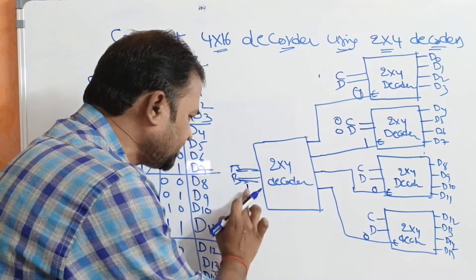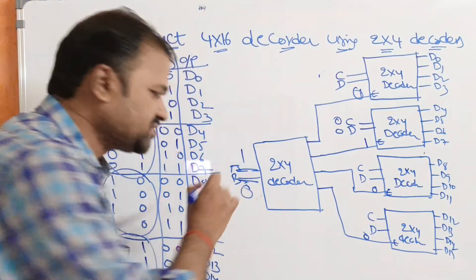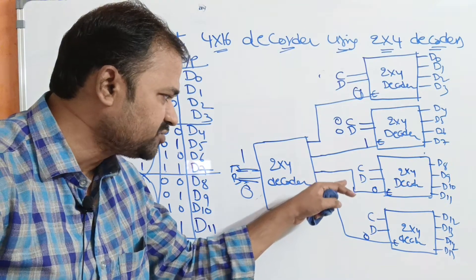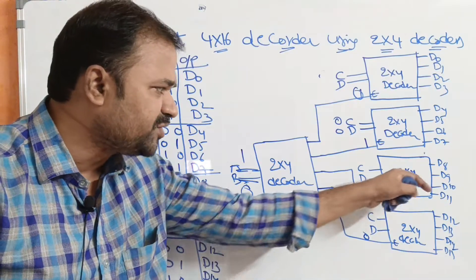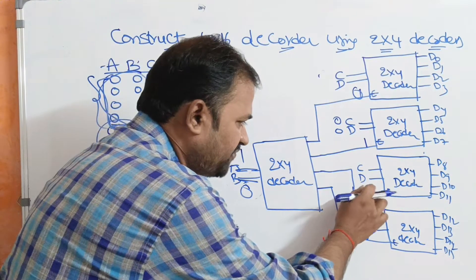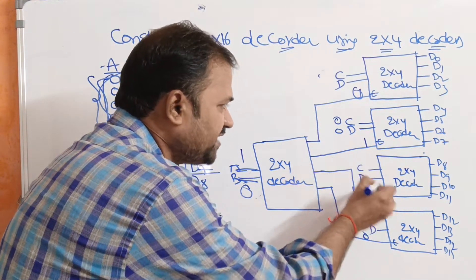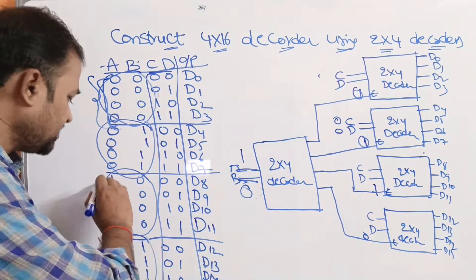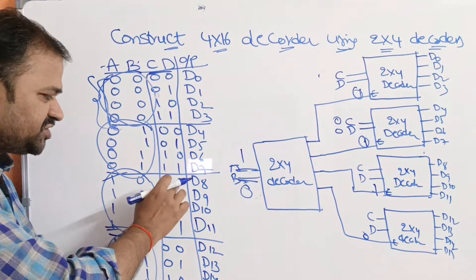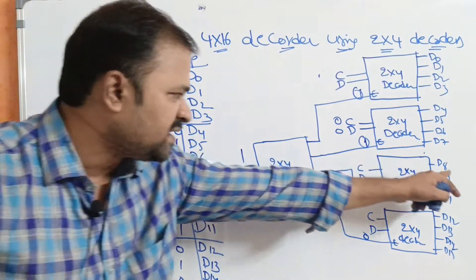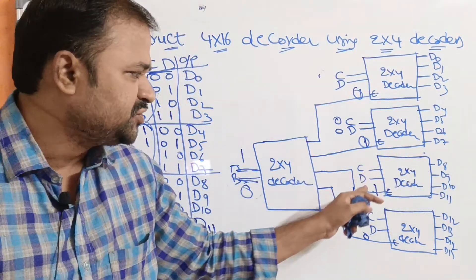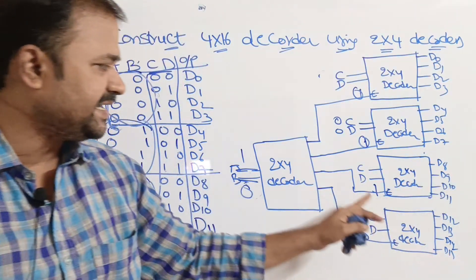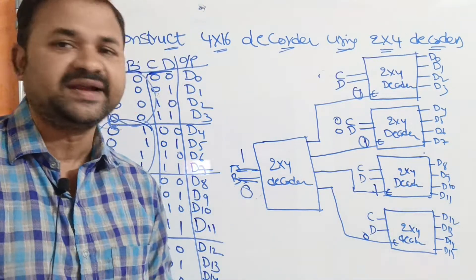Let us check one more combination where A and B are 1, 0. This means the third output line will be enabled, so the E value for the third 2 by 4 decoder is 1, whereas the other E values are 0. With C and D: 0,0 gives the first output line D8; 0,1 gives D9; 1,0 gives D10; 1,1 gives the fourth output line D11.